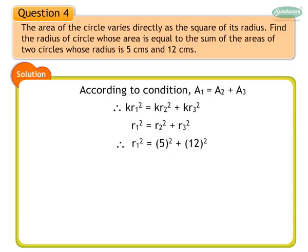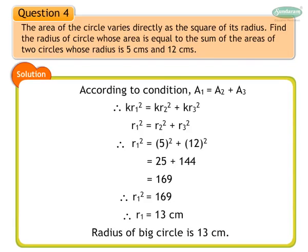We substitute r2 as 5 and r3 as 12. Therefore, r1 square is equal to 5 square plus 12 square. We get r1 square is equal to 25 plus 144. Therefore, r1 square is equal to 169, and we get r1 as 13 cm. The radius of the big circle is 13 cm.